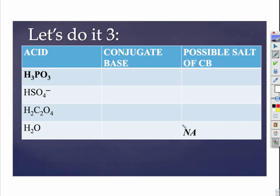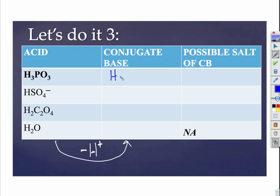This example gives us acids and requests the conjugate base. When you do that, you want to do what acids do best: take off one H. One of the advantages of this unit is most of the work we're going to do is a 1-to-1 mole ratio. So we lose one H and one plus charge, giving us H₂PO₃⁻ — it was neutral, and we lost a plus, so it's going to be negative.